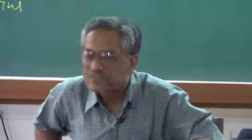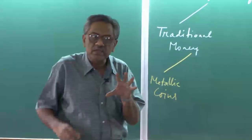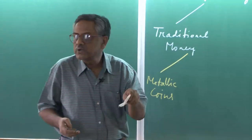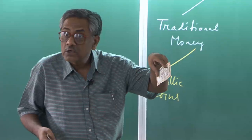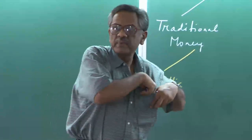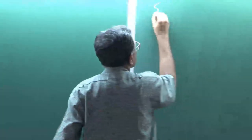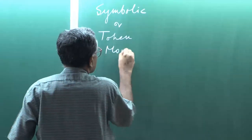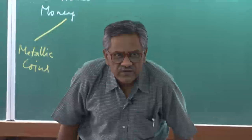This came to be known as token money or symbolic money — where the face value is more than the intrinsic value. Consider a 100 rupee note: this piece of paper is not worth 100 rupees in the market as a material, yet it has a face value of 100 rupees — that is symbolic or token money. This became the second stage of development of metallic coins.